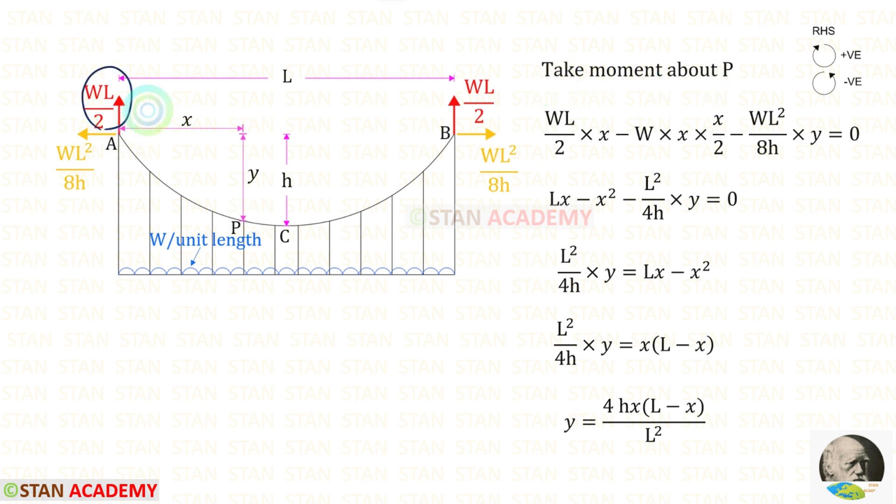The vertical reaction is acting in the clockwise direction so that it will be positive and the distance is x. The uniformly distributed load is acting in the anticlockwise direction so that it will be negative. We know that with the load we have to multiply the distance and a distance by 2. The horizontal thrust is acting in the anticlockwise direction so that it will be negative. For the horizontal thrust the perpendicular distance is y.